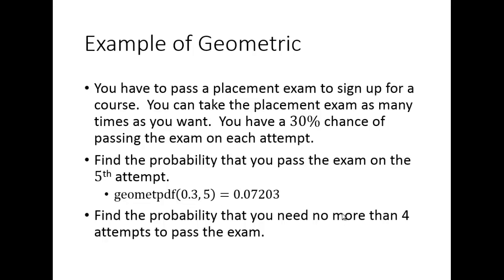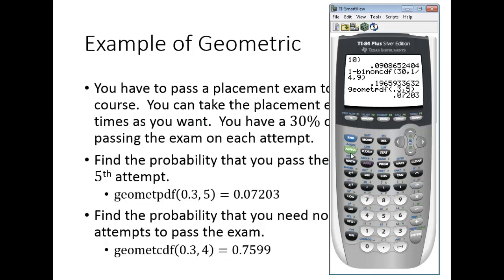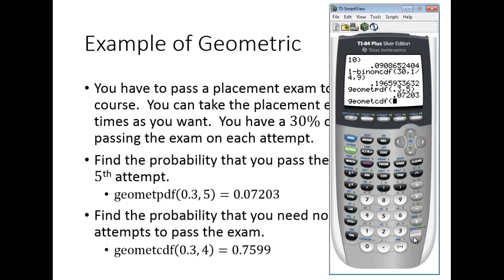Next: what's the probability you need no more than four attempts to pass? That means passing on the first, second, third, or fourth attempt. This is a geometCDF since we want less than or equal to 4 — no need for 1 minus here. Enter geometCDF with 0.3 and 4, giving exactly 0.7599, or about a 76% chance of passing within four attempts.